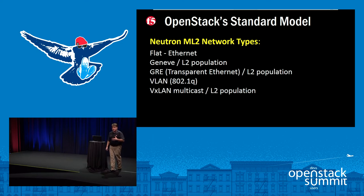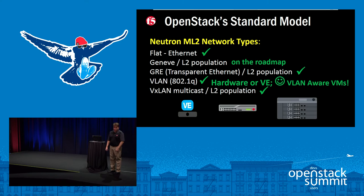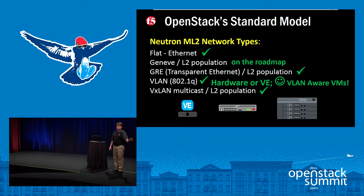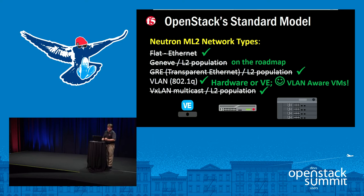It helps us on the network side too. ML2 standard network types let us know exactly what we're dealing with. As a vendor we look at that and say: great, I can make those network types work on software, on any one of our appliances, on big clusters. Standards are good things. For a lot of our customers, they just wanted to stick to VLANs. How happy are you to get VLAN-aware VMs? It gives us a lot of flexibility in a very standard way.